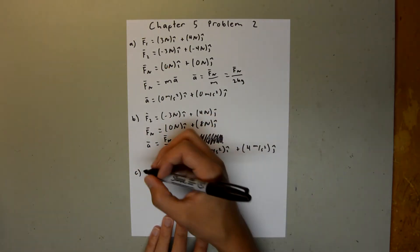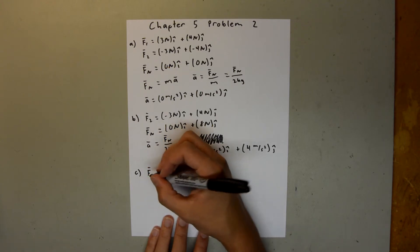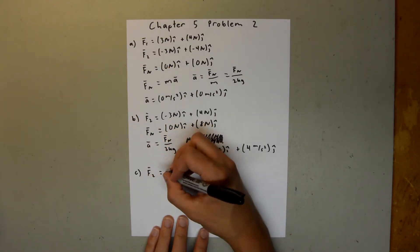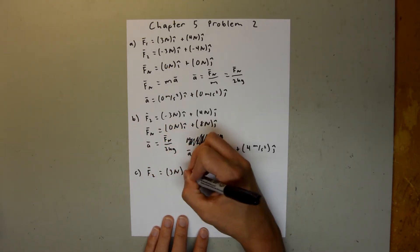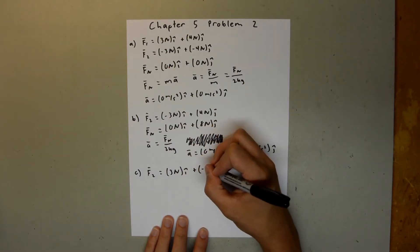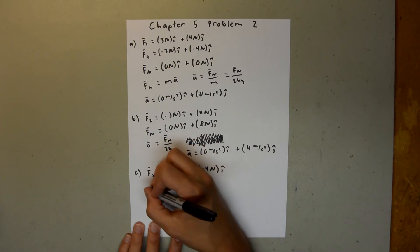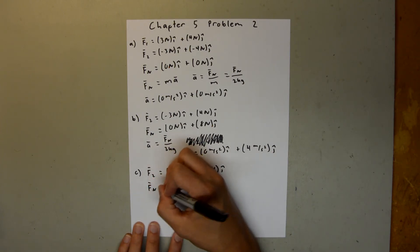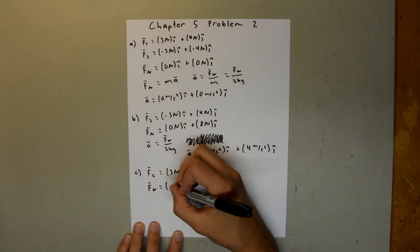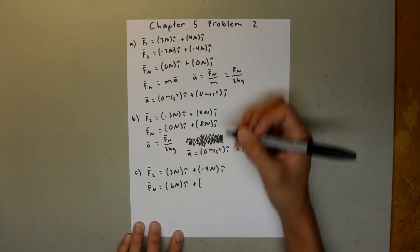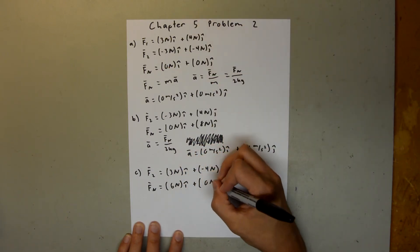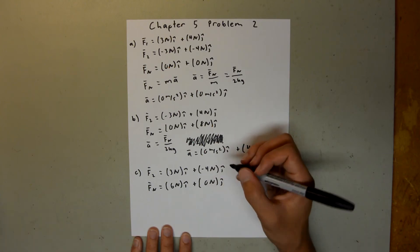And now, for Part C, our second force is equal to 3 newtons i-hat plus negative 4 newtons j-hat. So, our net force is equal to 3 plus 3, which is 6 newtons i-hat plus 4 minus 4, which is 0 newtons j-hat.